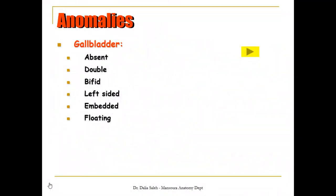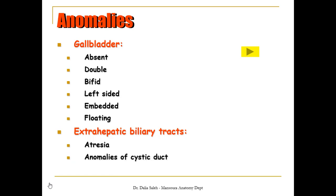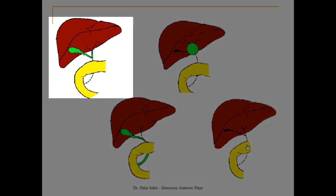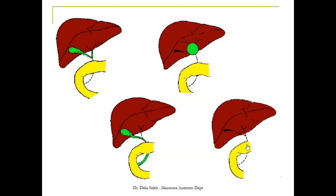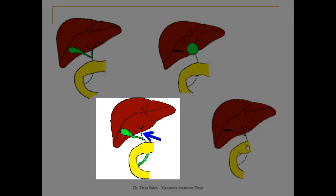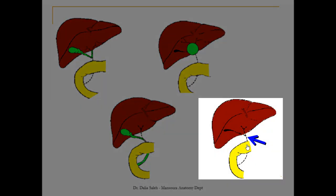The other type of anomalies regards the extra-hepatic biliary system. Either we have complete failure of re-canalization, which we call atresia, or anomalies in the formation of the cystic duct, or there is an accessory hepatic duct. In this picture, we have atresia in the common bile duct only. Here, we have it in the common hepatic ducts, common bile ducts, and also in the gallbladder. Here, the atresia lies only in the common hepatic ducts. Here, the atresia lies in the common hepatic ducts, in the gallbladder and cystic duct, and also in the common bile ducts.